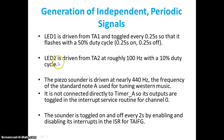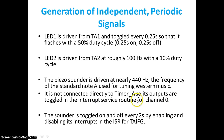LED 2 is driven from Timer A2 roughly at 100 Hz with a 10% duty cycle. Then a piezo sounder is driven nearly at 440 Hz — that is the note A used for western music — and it is connected directly to Timer A, so its output is toggled in an interrupt service routine for channel 0. The last condition: the sounder is toggled on or off every 2 seconds, meaning the piezo sounder needs to be enabled for 2 seconds and then disabled for 2 seconds.